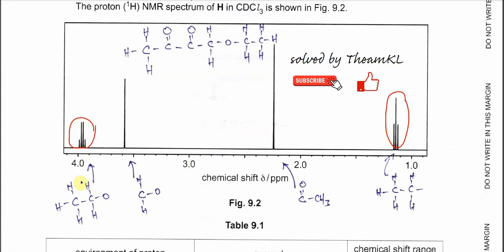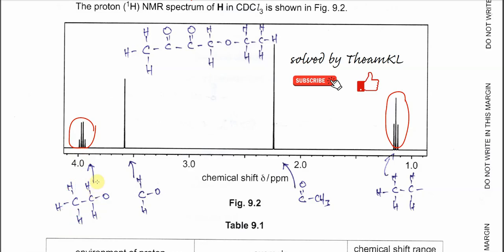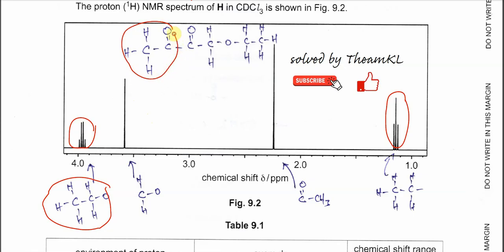The quartet arises from the CH₂ coupled with three adjacent protons (1+3), and the chemical shift of approximately 4 ppm indicates this CH₂ is next to an oxygen. So from the quartet and triplet, we know the compound contains a -CH₂CH₃ group where CH₂ is bonded to oxygen (an ethoxy group, CH₂-O). Combined with the earlier hint about the methyl ketone, we now have the ethyl ester fragment and the methyl ketone fragment identified.